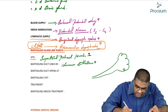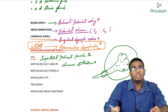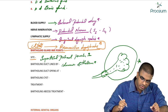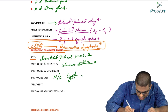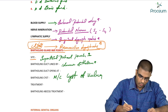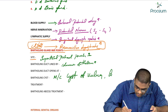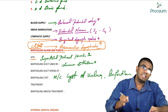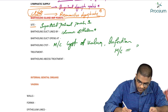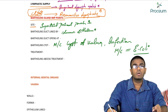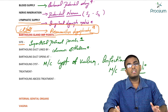If the Bartholin's duct is blocked, secretions accumulate and form a cyst. Bartholin's cyst is the most common cyst of the vulva. The most common cause is blockage due to infection, and the most common causative organism is E. coli.